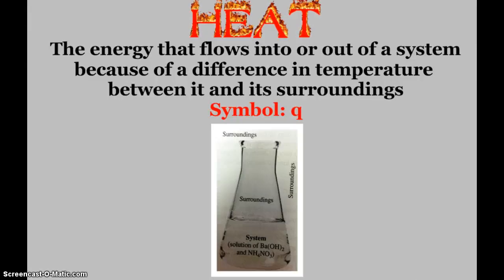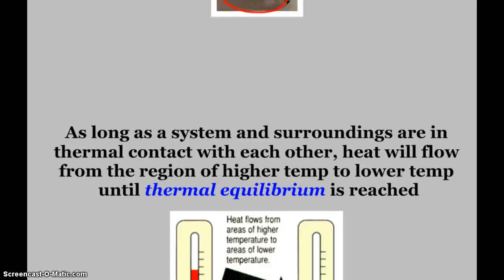Heat is the energy that flows into or out of a system because there's a difference in temperature between the system and the surroundings. Heat has a symbol of Q. If you're looking at an Erlenmeyer flask with a solution of barium hydroxide and ammonium nitrate, the system is that solution. The surroundings is everything else around it—typically the near vicinity of the flask. Technically, Jupiter is outside the system, so Jupiter is part of the surroundings. But we really just talk about things that are directly in contact with the system, more importantly, in thermal contact.